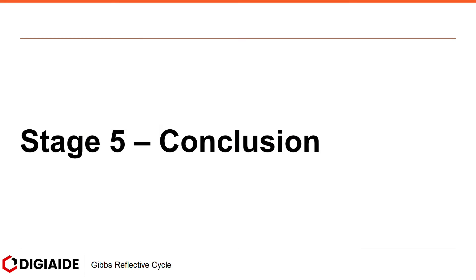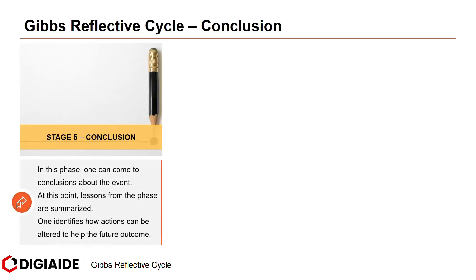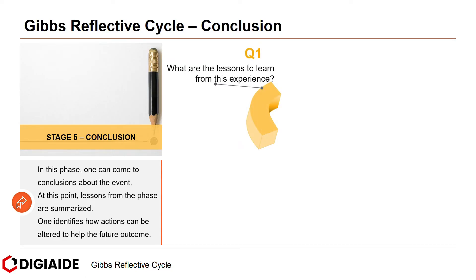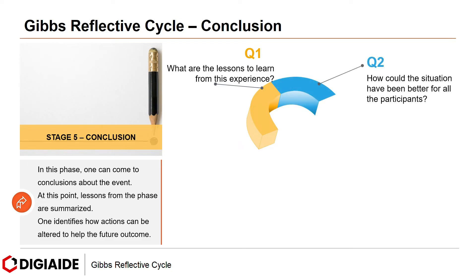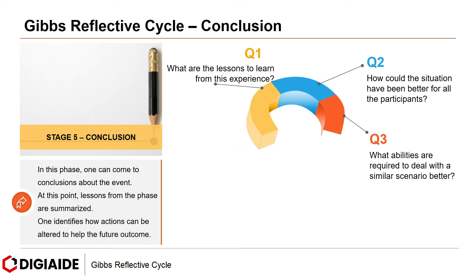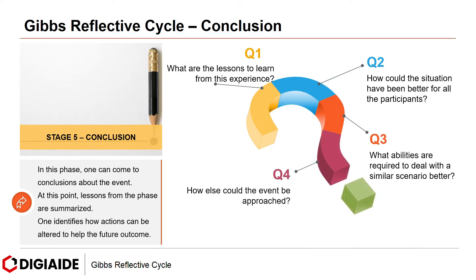Stage 5 is Conclusion. In this phase, one can come to conclusions about the event. At this point, lessons from the phase are summarized. One identifies how actions can be altered to help the future outcome. The questions in this phase: first, what are the lessons to learn from the experience? Second, how could the situation have been better for all the participants? Third, what abilities are required to deal with a similar scenario better? And finally, how else could the event be approached?